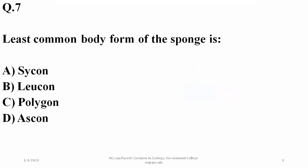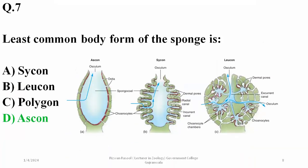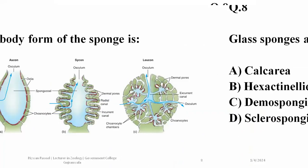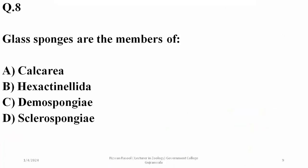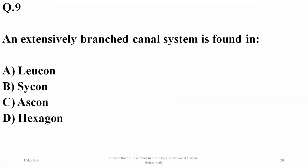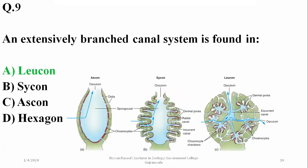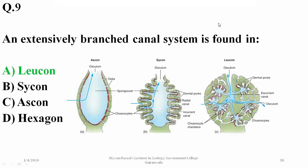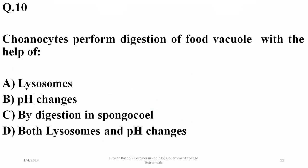Question seven: the least common body form of the sponge is asconoid — it is also the simplest. Other forms such as syconoid and leuconoid are comparatively more common. Glass sponges are also known as Venus flower basket and belong to Hexactinellida, so B is the right option. An extensively branched canal system is found in leuconoid body forms.